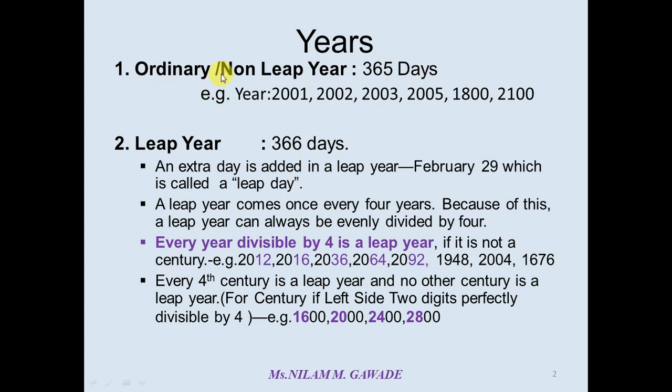Before starting this, we need to know the different years. First one is ordinary year or non-leap year, it is having 365 days. And second one is leap year. In the leap year, one extra day is added, that is February 29 which is called as leap day, so total number of days in a leap year are 366 days.